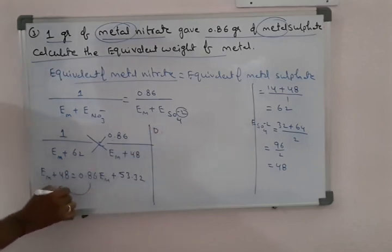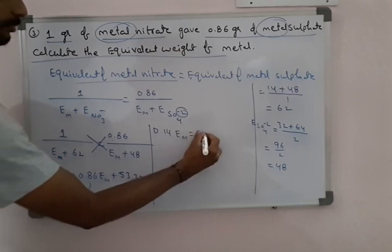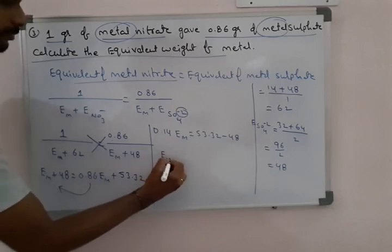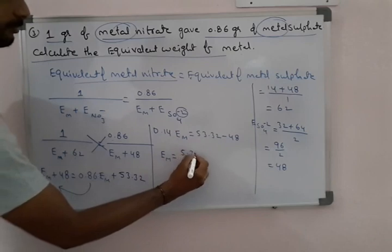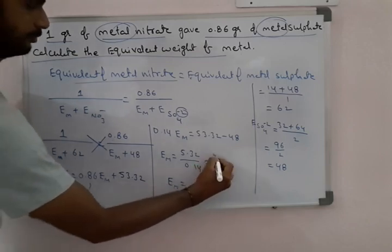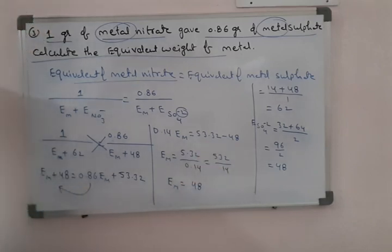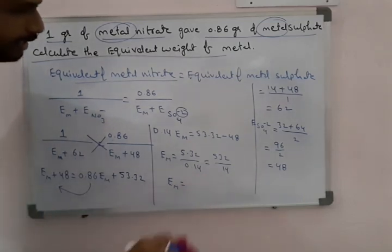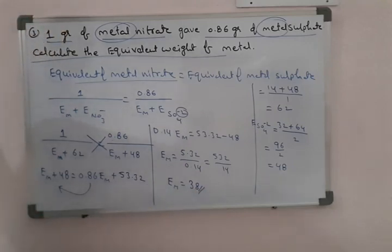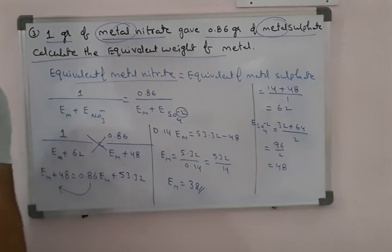By moving terms to one side, we get 0.014 times the equivalent weight of metal. Solving this, we get the equivalent weight of metal equals exactly 38. This is the equivalent weight of that unknown metal.